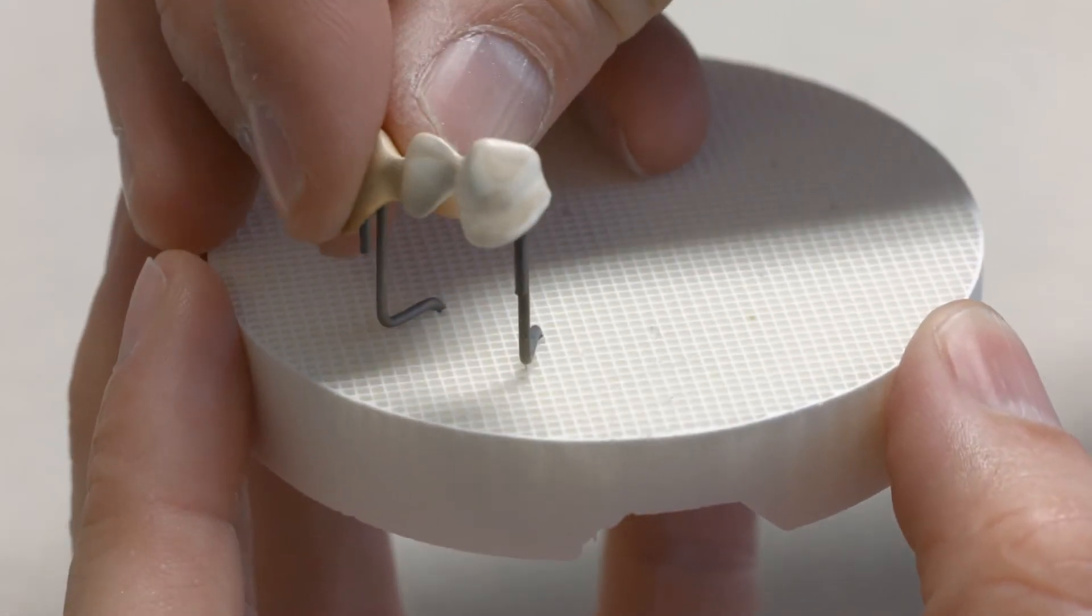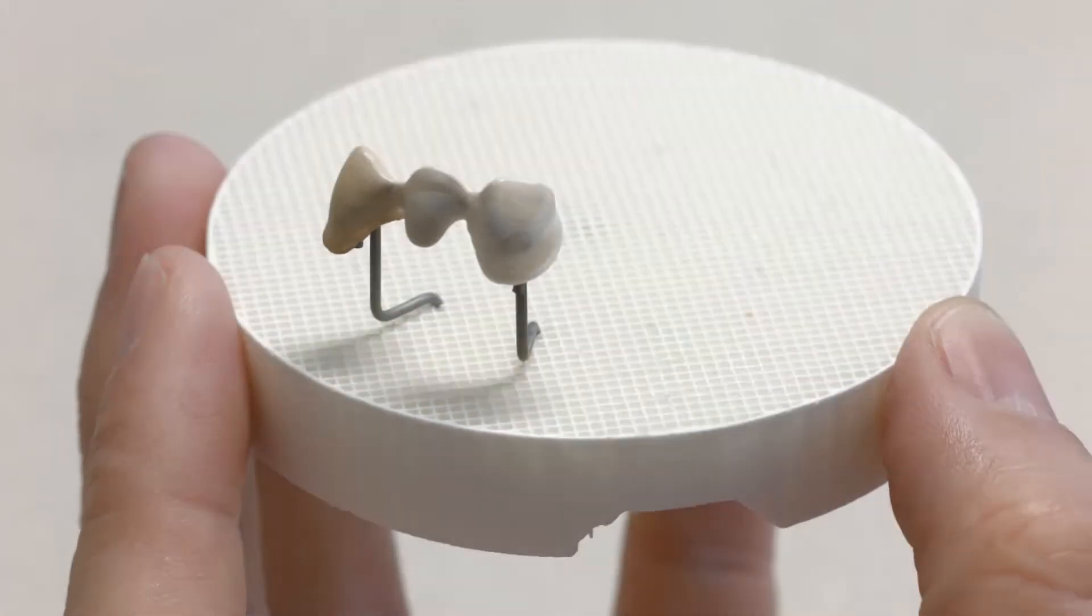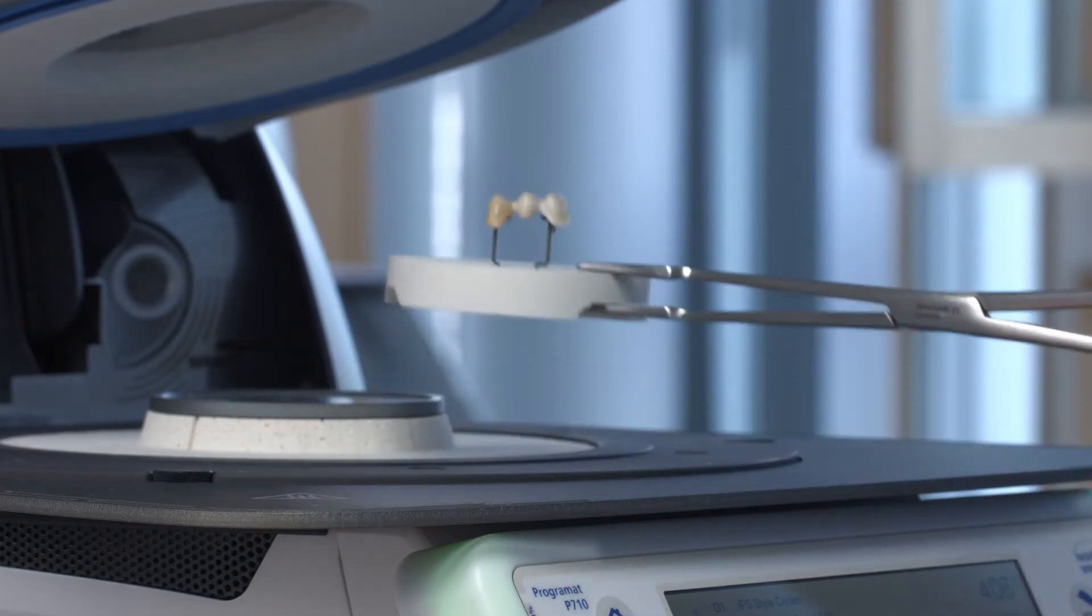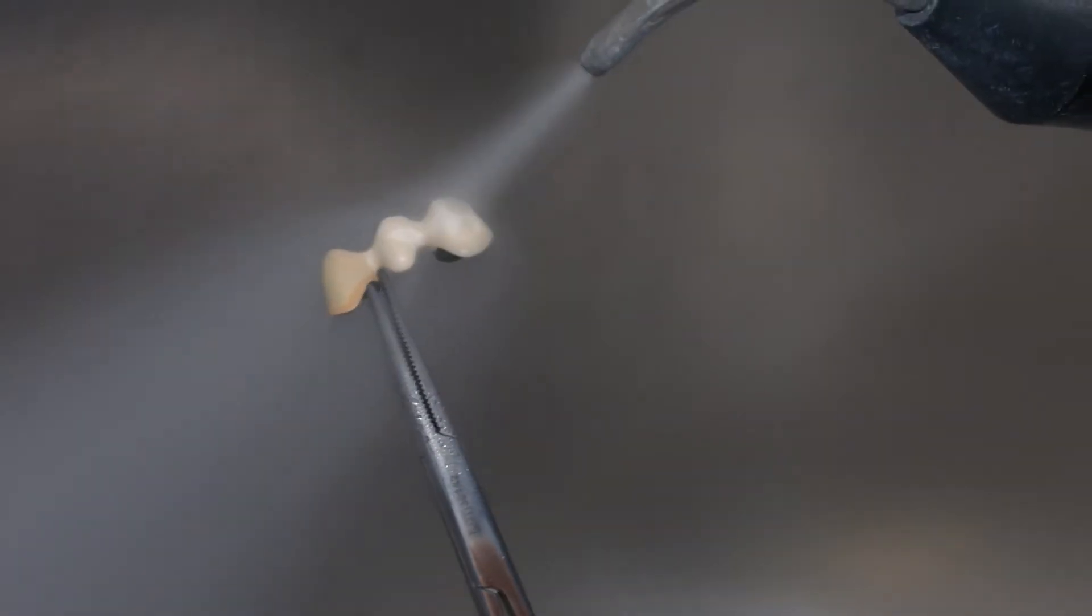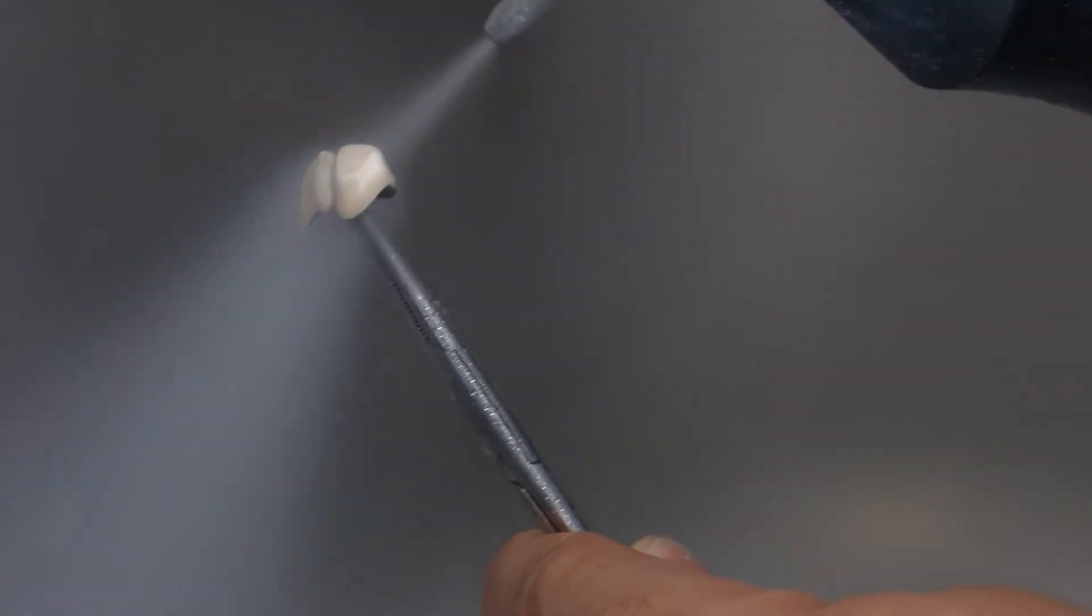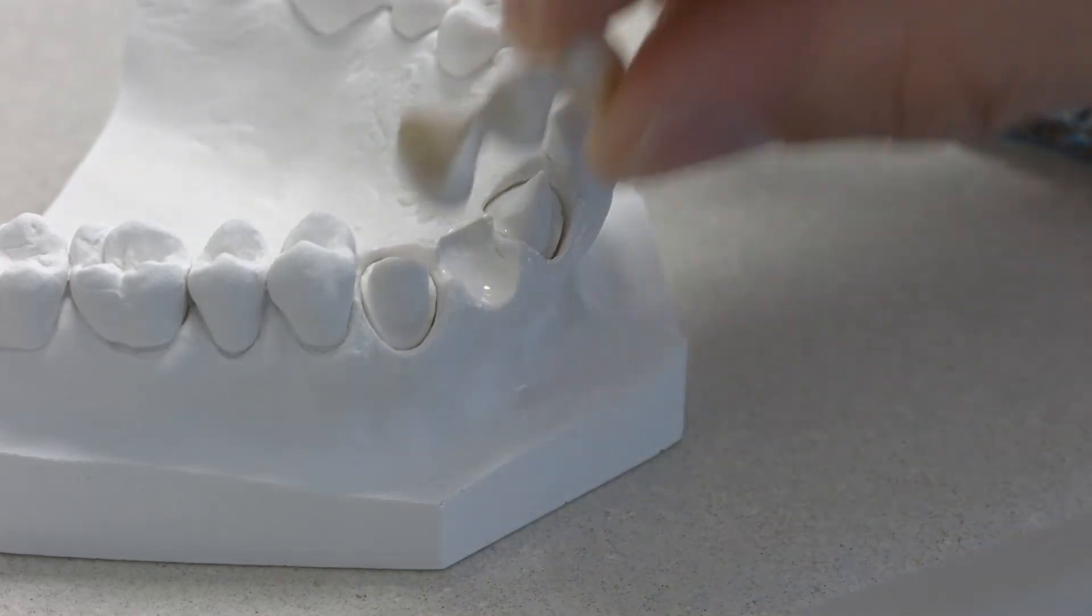Next, remove the framework from the die and place it on the firing tray. The restoration is now ready for the second margin firing. After the firing process, allow the framework to cool to room temperature and then thoroughly clean it with the steam jet. The framework now has a fired ceramic margin.